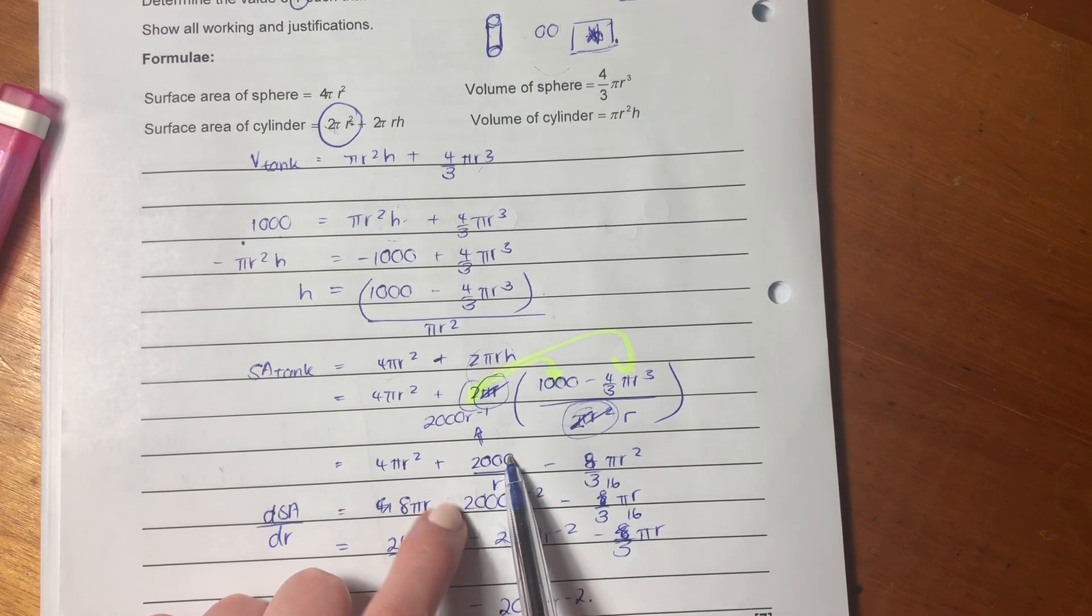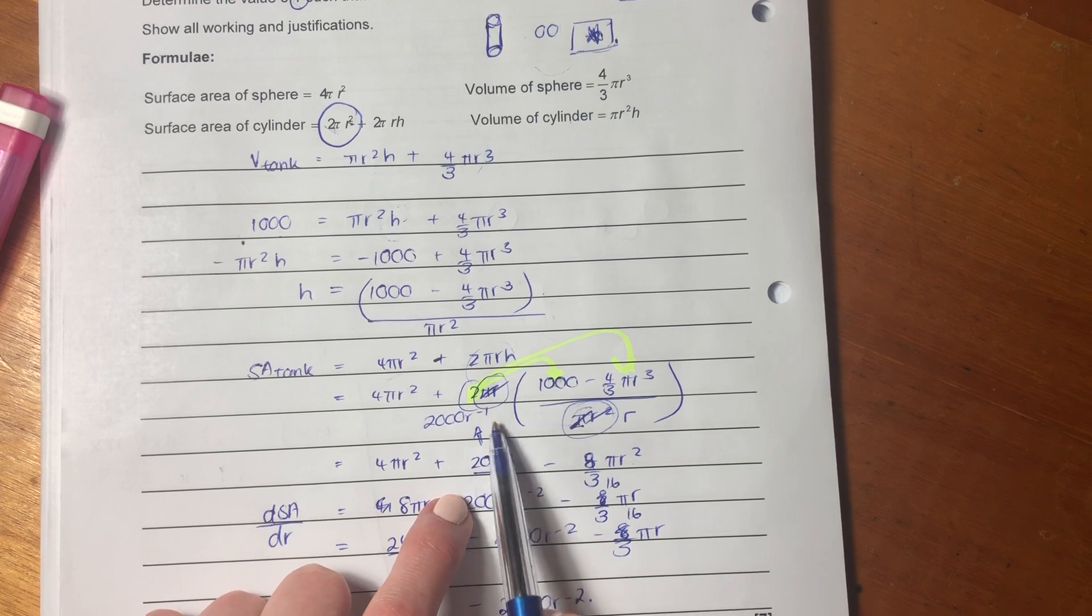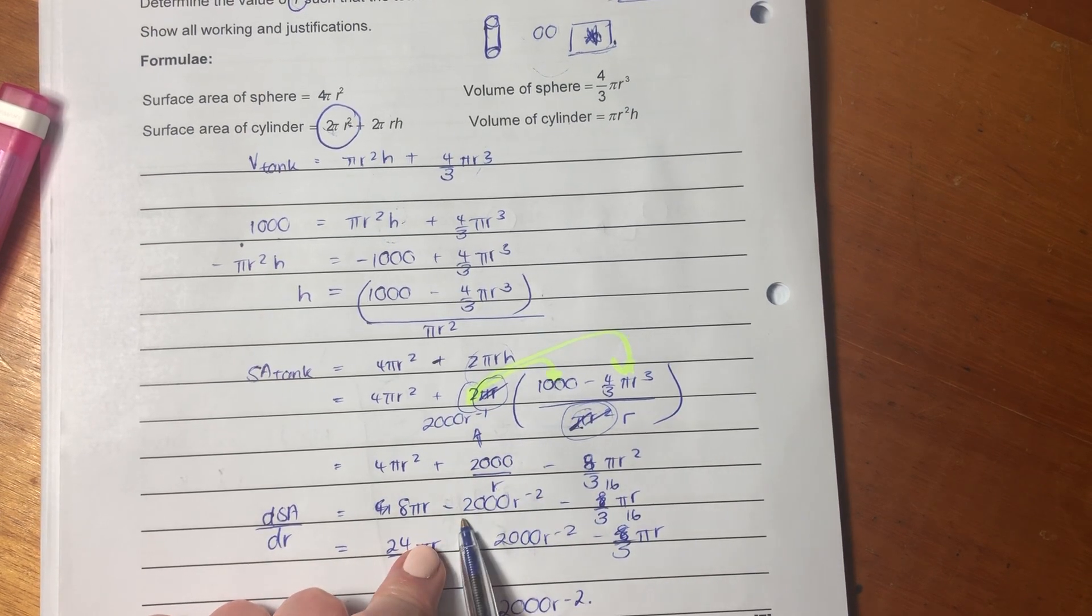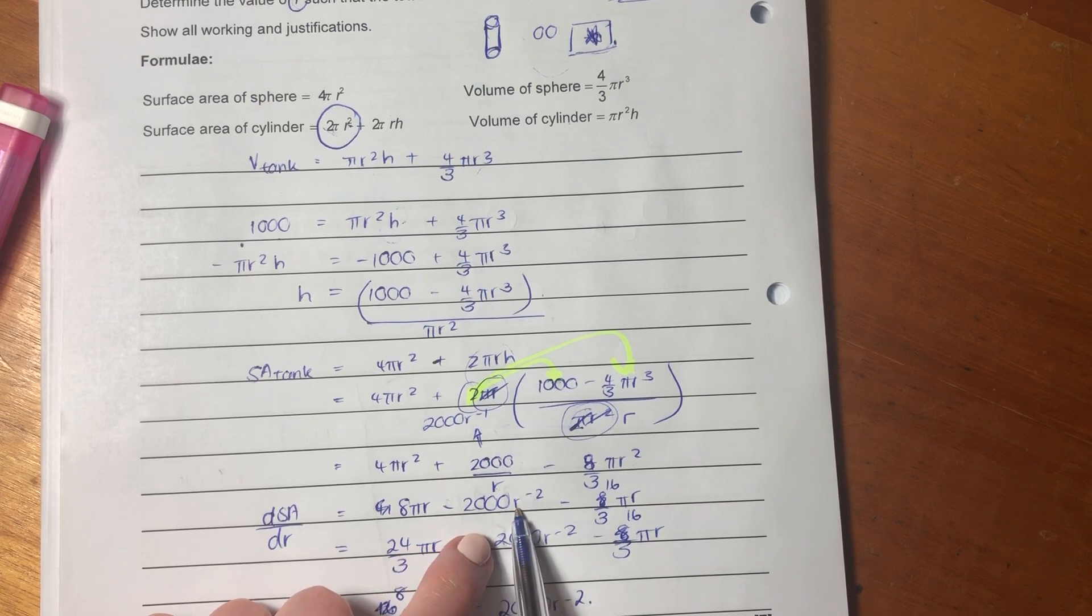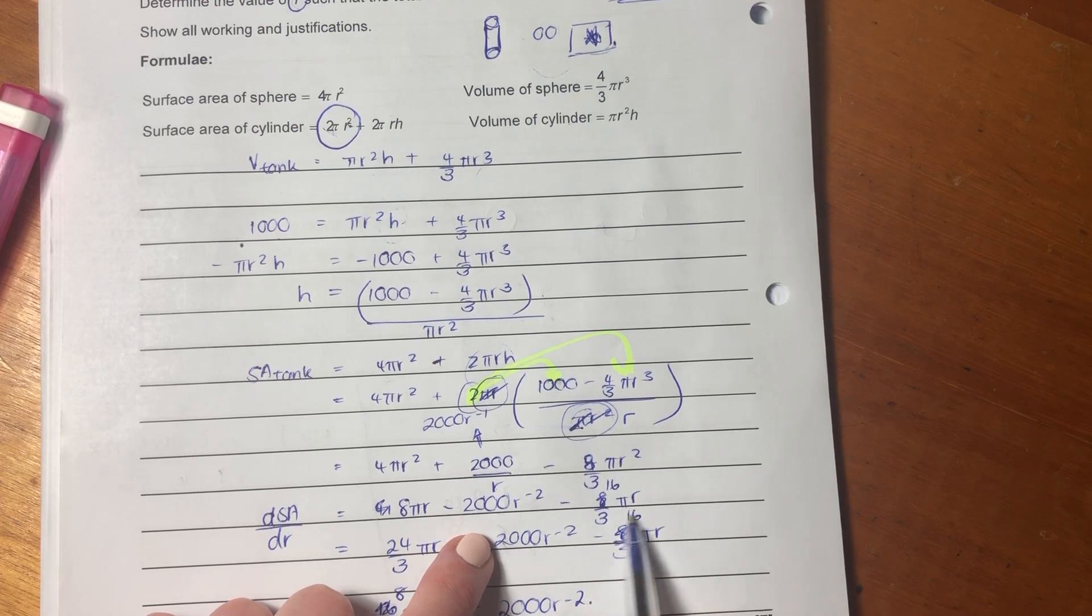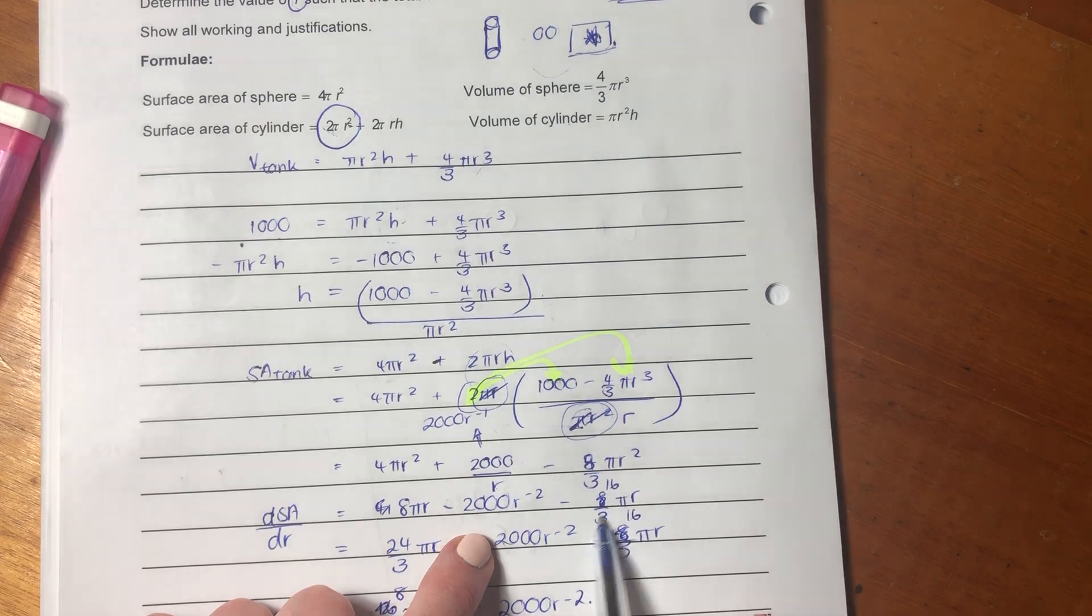Remember here, this is quite important. A variable in the denominator can be brought to the top as long as you make the exponent negative, which is what I've done. I've got the derivative. So, it's negative 2000 r to negative 2, because remember, we subtract another one from the negative one. I've got the derivative of this term here. 16 over 3, πr.